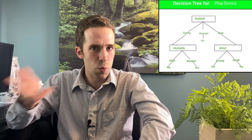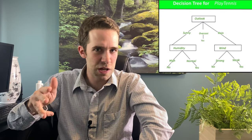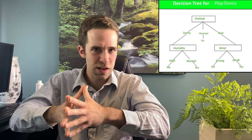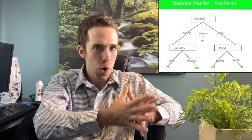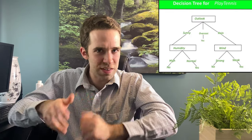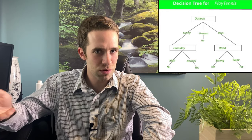For example, starting at the top, we ask what the weather outlook is. Let's suppose it's sunny — you go down the tree and ask what the humidity is. If it's high, we say no, we're not going to play tennis. If it's normal, we say yes. The problem with decision trees, though, is that they tend to have high variance — that is, they tend to overfit to the training set and then don't generalize very well.